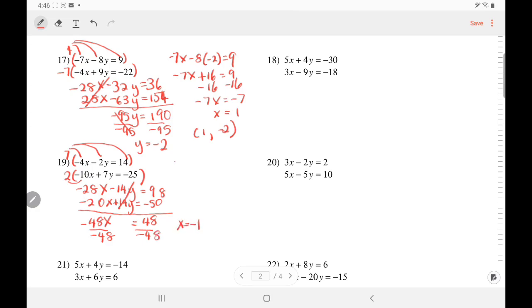Plug it back. Negative 4 times negative 1 minus 2y equals 14. 4 minus 2y equals 14. Subtract 4. Negative 2y equals 10. Divide. y equals negative 5. Present your answer. Negative 1, negative 5.